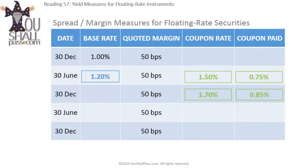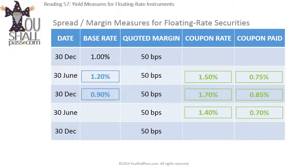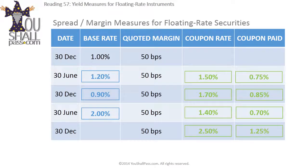The investor receives a coupon of 85 basis points on 30th December. On that same day, the prevailing LIBOR is 90 basis points, so the next coupon due on 30th June will have an annual rate of 1.4%, and the investor will actually be paid 70 basis points. If on 30th June all hell has broken loose and LIBOR has shot up from 90 basis points to 2%, then the next coupon due on 30th December will be 1.25% — half the annual coupon rate of 2.5%, which is 2% LIBOR plus the quoted margin of 50 basis points.